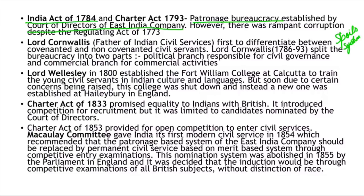This patronage bureaucracy continued under the India Act of 1784 and Charter Act of 1793. Because of this patronage bureaucracy, there was rampant corruption. The Regulating Act of 1773 had a prohibition on bribery and related legal actions. However, despite this, rampant corruption did not stop.